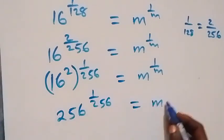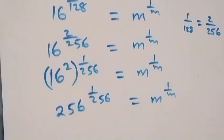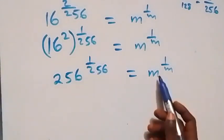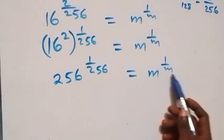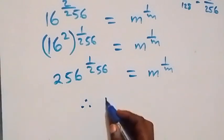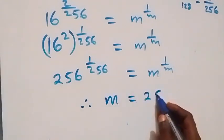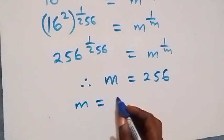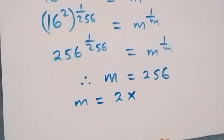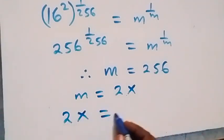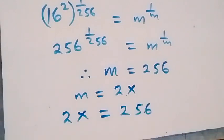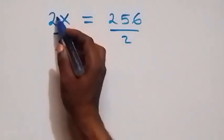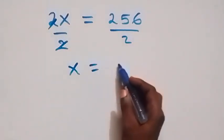When we compare what we have, the base on the left equals the denominator of its exponent — the same pattern holds on both sides. We can conclude that m equals 256. Recalling that m equals 2x, this implies 2x equals 256. Dividing both sides by 2, the 2s cancel and we have x equals 128.